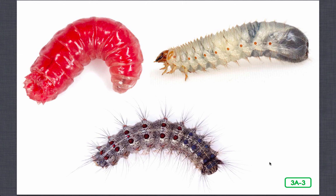Larvae feed and grow as quickly as they can. They also molt, or shed their hard exoskeletons, many times as they grow because the exoskeletons don't grow with them. In this way, insect larvae grow larger each time they molt until they are ready to change into adult insects.